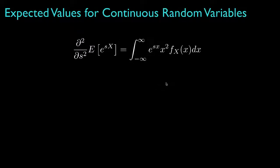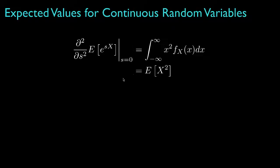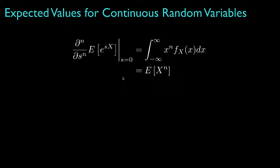Likewise, taking another derivative brings another factor of x into the integral from the exponent, and evaluating at s equals zero gives the second moment for the random variable. In general, evaluating the nth derivative of the moment generating function at s equal to zero gives the nth moment for the random variable. This can be a convenient way to obtain all integer moments by performing only one integration to compute the original moment generating function.